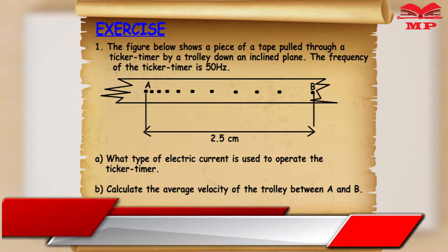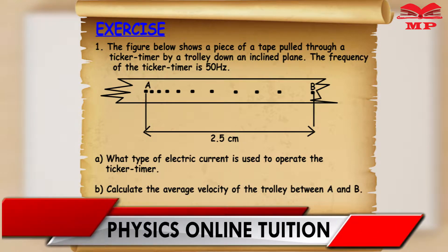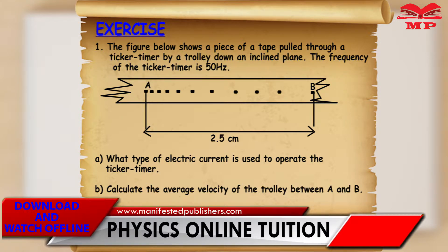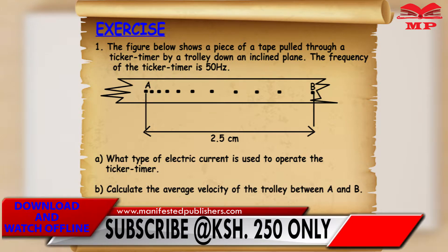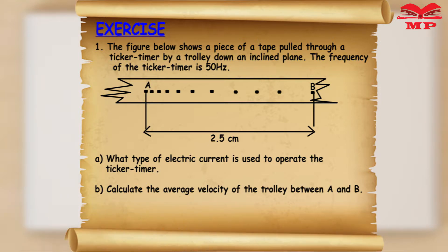The figure below shows a piece of tape pulled through a ticker timer by a trolley down an inclined plane. The frequency of the ticker timer is 50 hertz. You have the diagram. Part A: what type of electric current is used to operate the ticker timer?